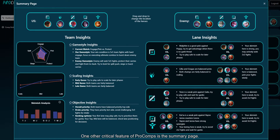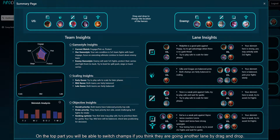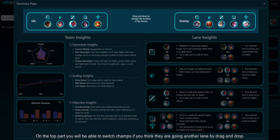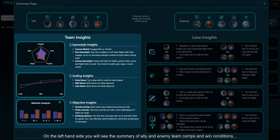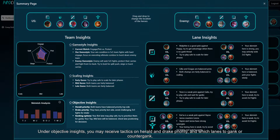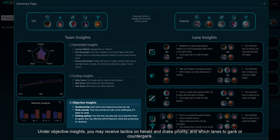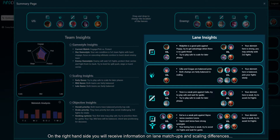One other critical feature of Pro Comps is the summary page. When all champs are selected, you will be able to see a popup with team insights and lane insights. On the top part, you can switch champs if you think they are going to another lane by drag and drop. On the left-hand side, you will see the summary of ally and enemy team comps and win conditions, insights on scaling and skirmishing analysis where you can observe specific 2v2s and 3v3s on top and bot side. Under objective insights, you may receive tactics on herald and drake priority, and which lanes to gank or counter-gank. On the right-hand side, you will receive information on lane matchups and scaling differences, and a summary of which team has a skirmish advantage.